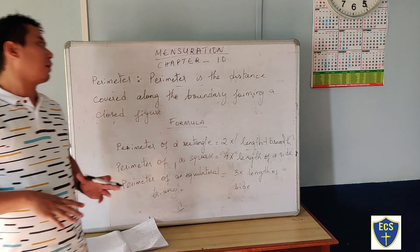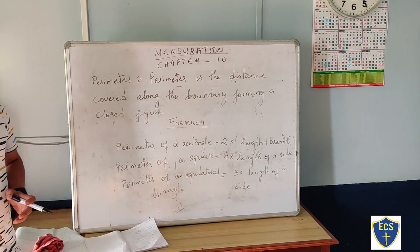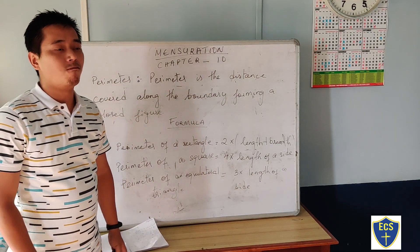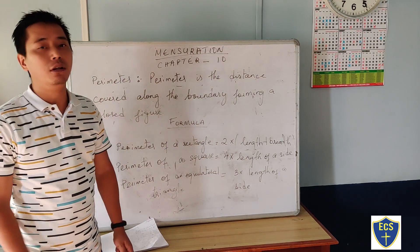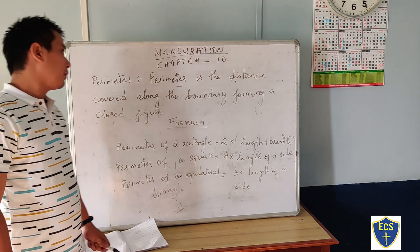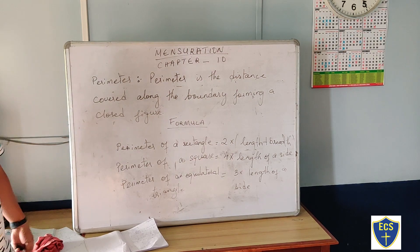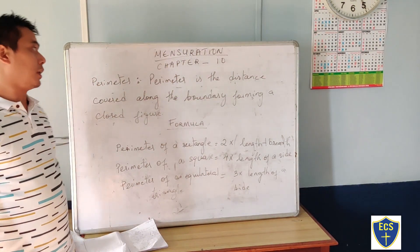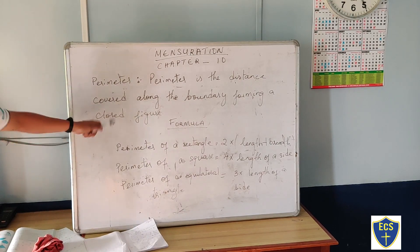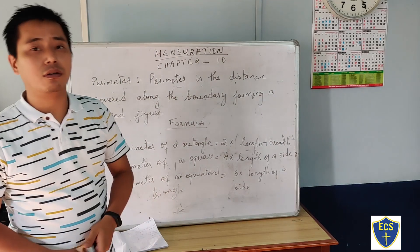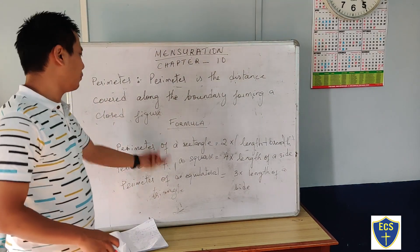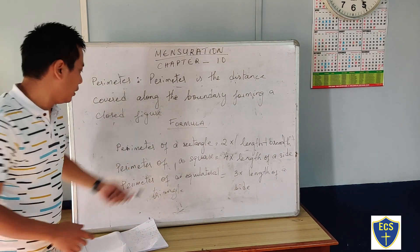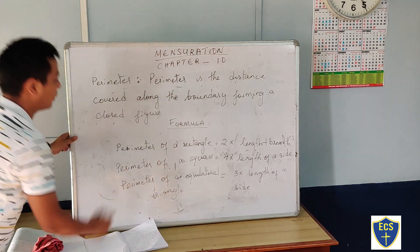Last year, I think, you did learn this chapter — mensuration. So you have to listen very carefully from the beginning. Today we are going to learn mensuration, that is chapter number 10. You have to copy this, and mensuration is about formulas. If you know the formula it will be easy for you, so you have to learn these formulas by heart.